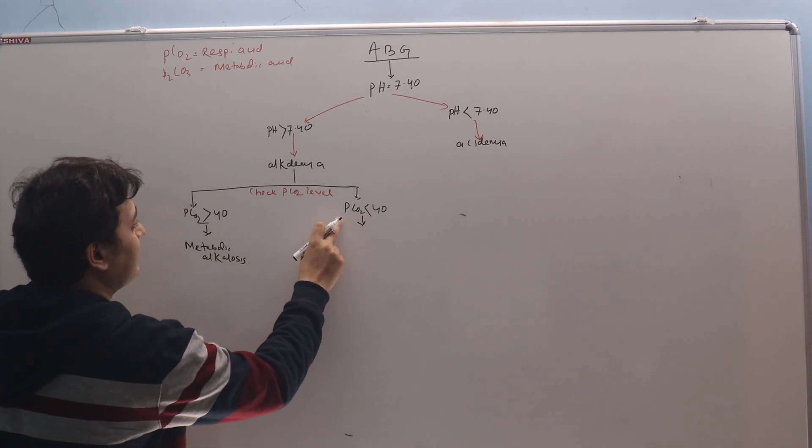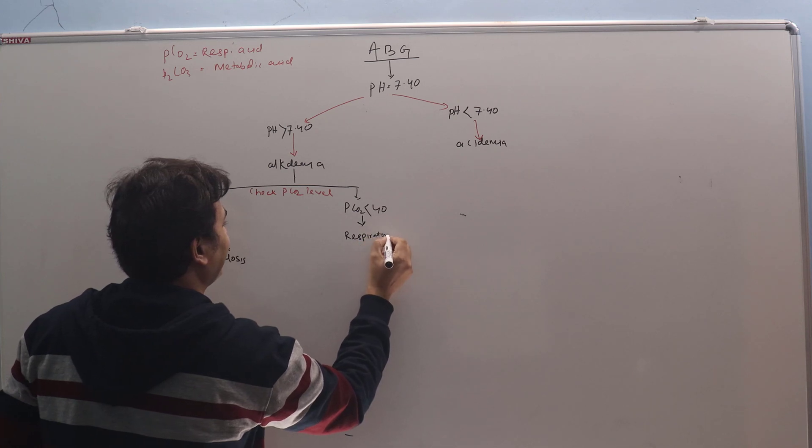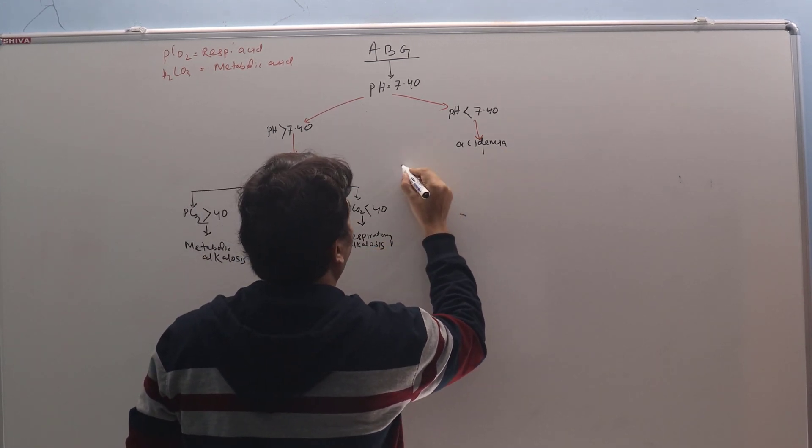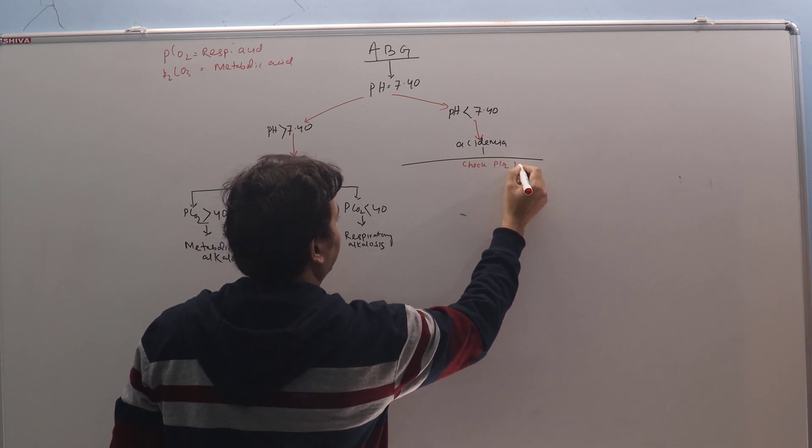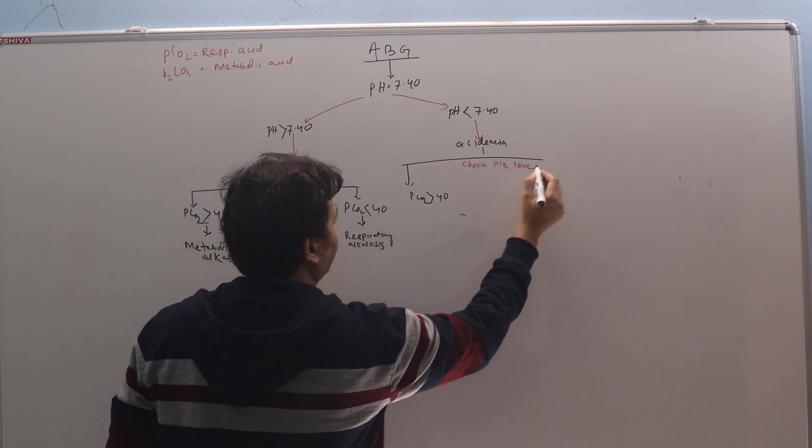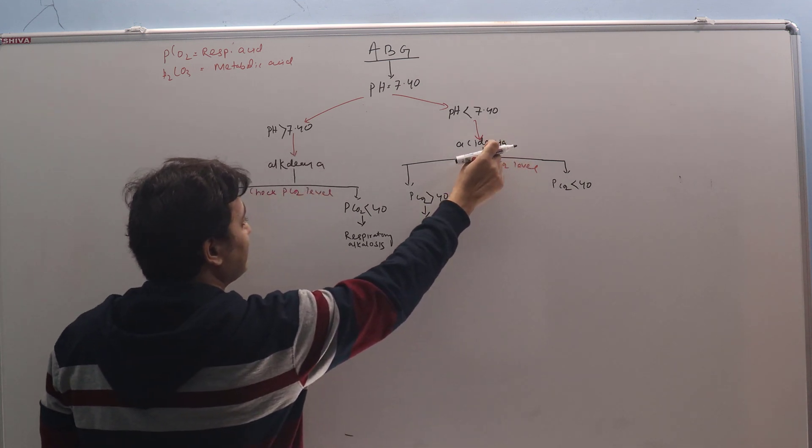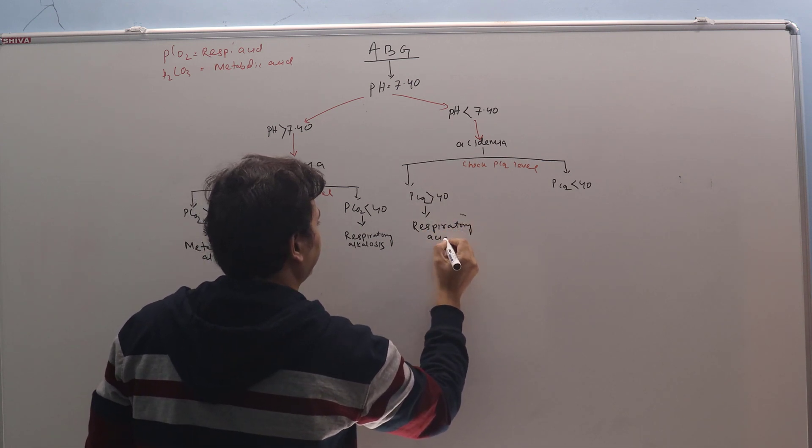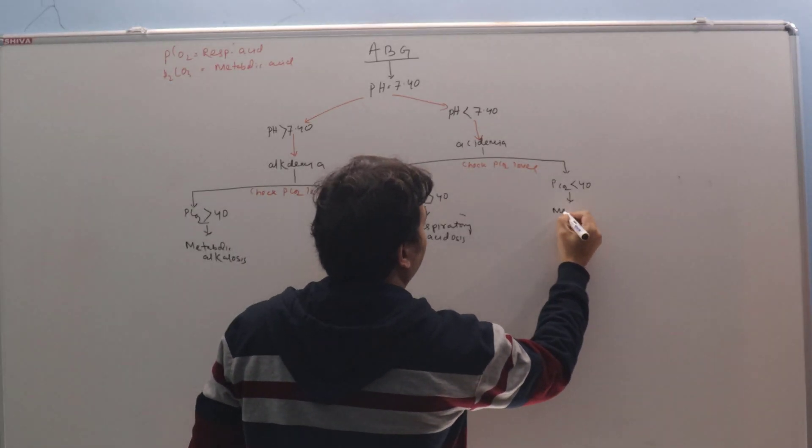If PCO2 is less than 40, that means it's alkalemic pH, also alkalemic, so it will be respiratory alkalosis. The same thing will come here also. Check PCO2 level. We can have two probabilities: one is PCO2 is more than 40, and then PCO2 less than 40. In the background of acidemia, if PCO2 is more than 40, that means it's respiratory acidosis. And if it is acidemia and the PCO2 less than 40, that means it is metabolic acidosis.